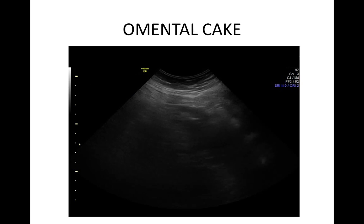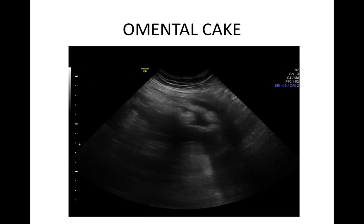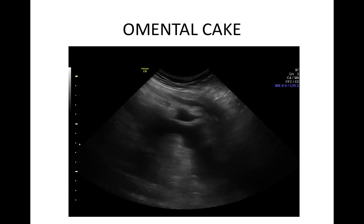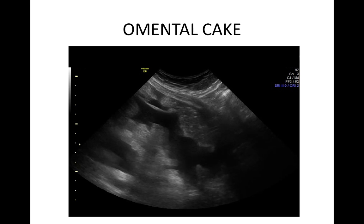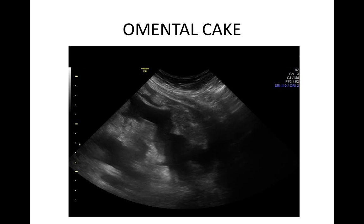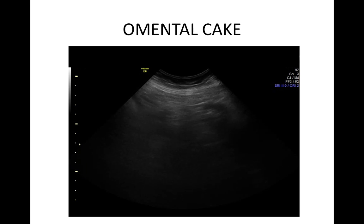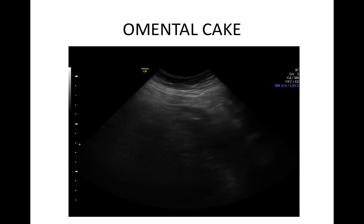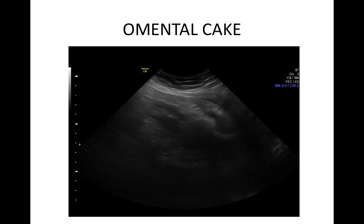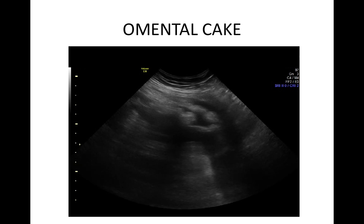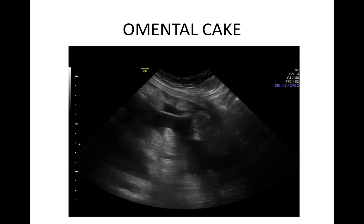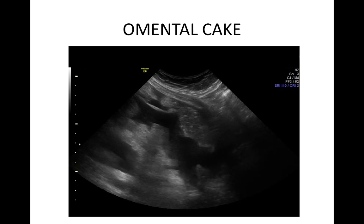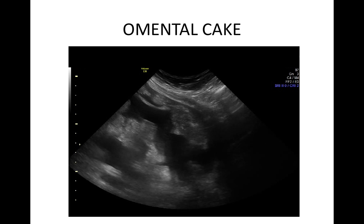You can see whether the tumour has metastasised to the omentum by scanning in the epigastrium in the longitudinal plane. The omentum is normally difficult to see, but when there are metastases the resulting omental cake can be quite obvious, floating in ascites.